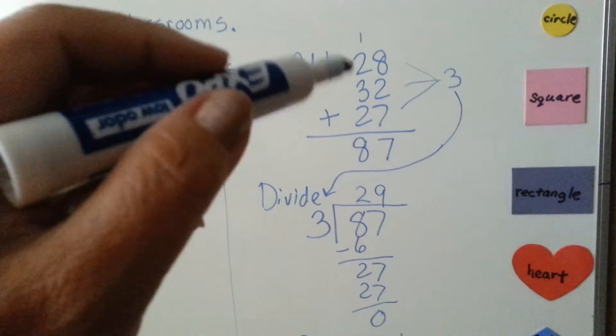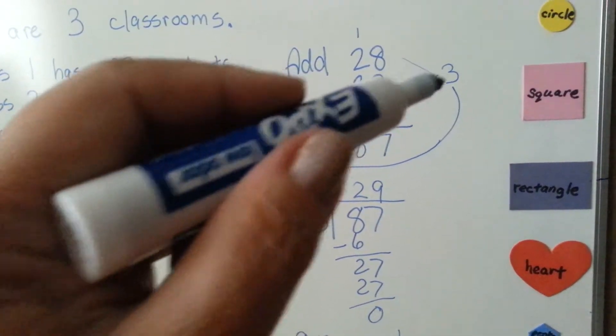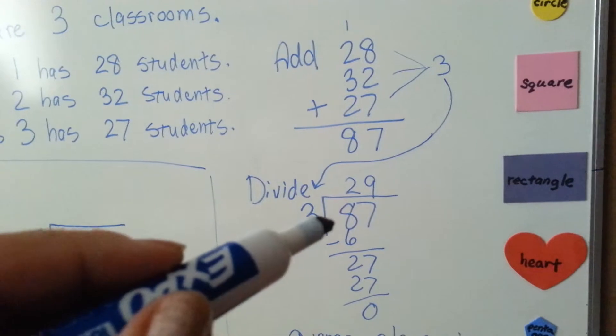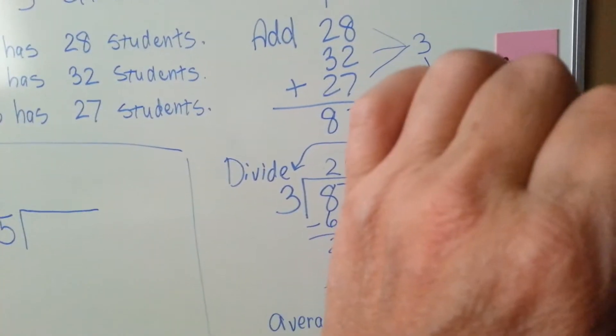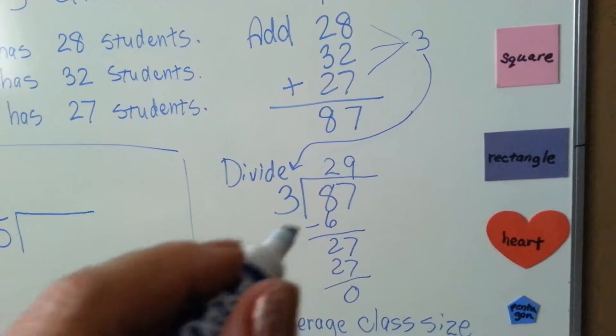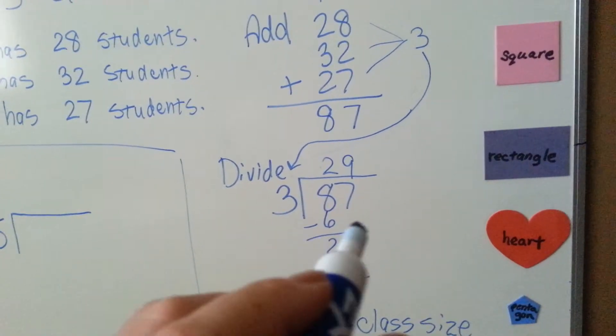Now, because we added three things up, we're going to divide the answer, the total, by 3. 3 goes into 87. Well, let's look. 3 goes into 8 two times, and 3 times 2 is 6. We put the 6 down here and do our subtraction.